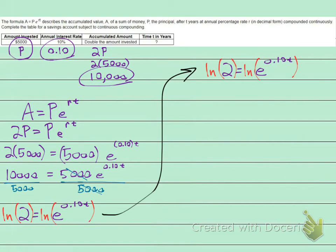So the left-hand side, we have the natural log of 2, which equals the right-hand side. The natural log of E to the power of anything is just that anything. So it equals 0.10 T.